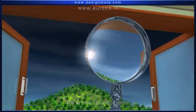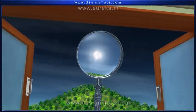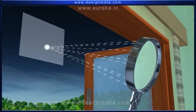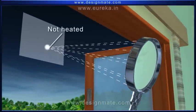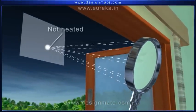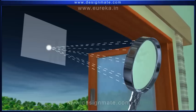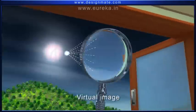The sun viewed from a concave lens would appear as a point. If you place a paper at this point, it would not be heated. The image formed in this case is a virtual image.